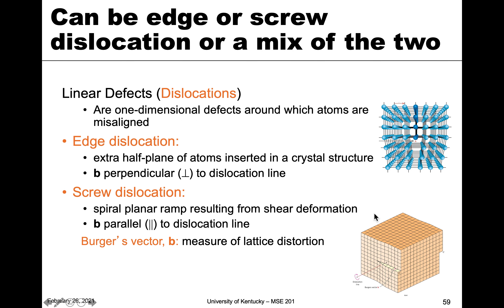There are multiple types of dislocations. The two pure kinds are edge dislocations and screw dislocations — both are one-dimensional defects where atoms are misaligned. The first is the edge dislocation, which can be visualized as a perfect crystal with an extra half plane wedged in. It is defined by the Burgers vector b being perpendicular to the dislocation line.